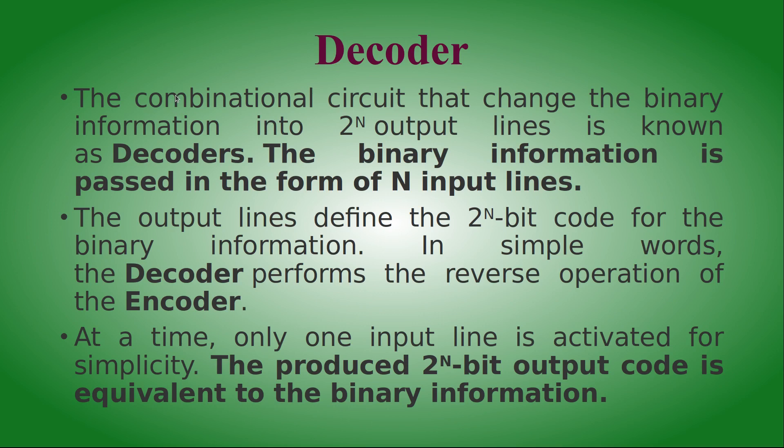The decoder is a combinational circuit, which means it combines different types of gates — for example, AND gates and NOT gates. Two or more gates are combined to form one circuit, which is why it is called a combinational circuit. It produces a 2^n bit output code equivalent to binary information.